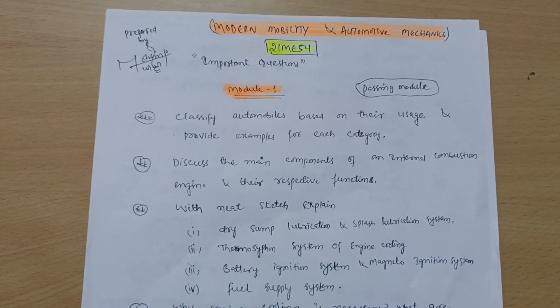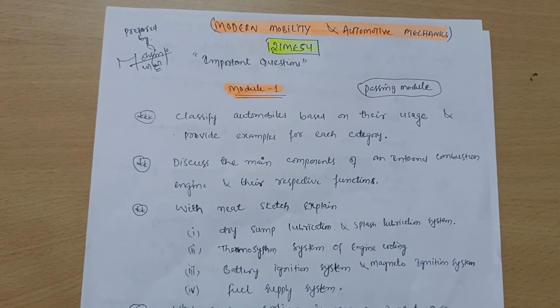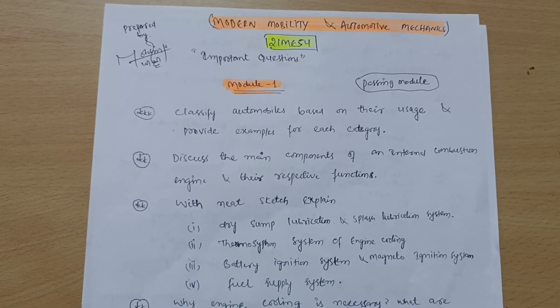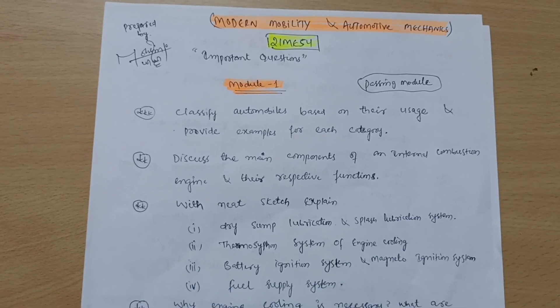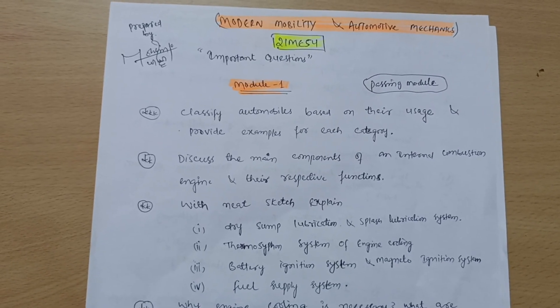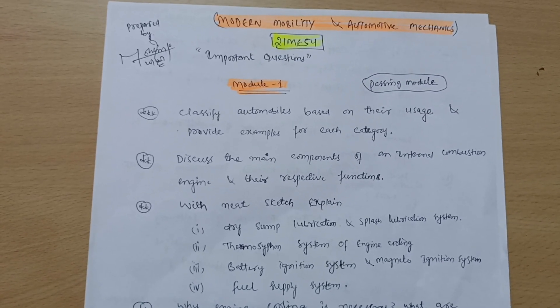Most of the students were asking me about important questions. So let me tell you, there are three passing modules: Module 1, Module 2, and Module 5, comparatively with the third and fourth ones.